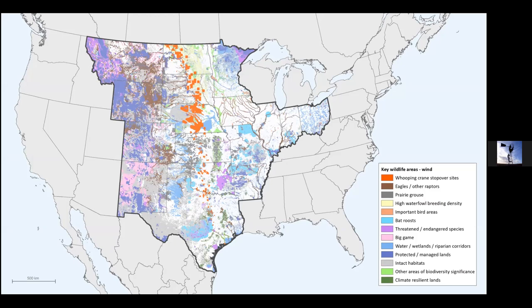This is our primary map product. We've elected to make a simplified version of this dataset available for download so that interested parties can access it, incorporate it into their own GIS, and use it for decision-making. We also spun up a simple online mapping application that non-GIS professionals can use to explore the map. Nathan will provide a link to that resource toward the end of our presentation.